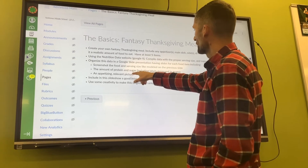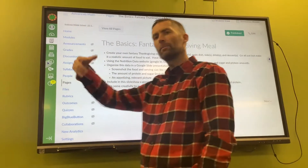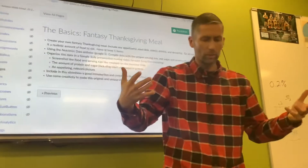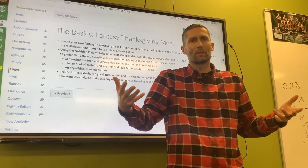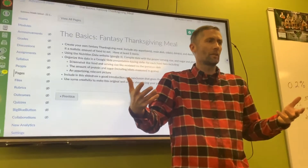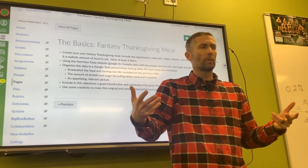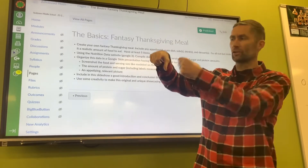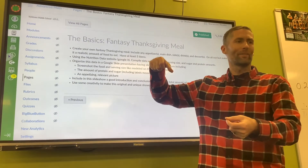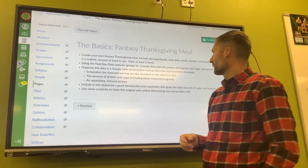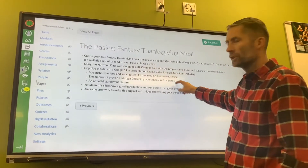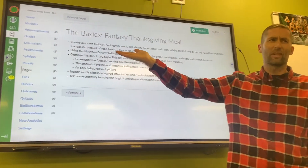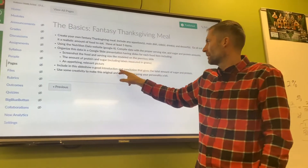You're gonna put the amount of each item, and you're gonna have an appetizing, relevant picture to go with it. If you have turkey, don't put a turkey bird with feathers — make it look appetizing. Be creative: Photoshop yourself holding a turkey leg or whatever it might be. If all you do is compile the data and be robotic about it, you're not gonna get a great grade — you'll get a C, which is average.